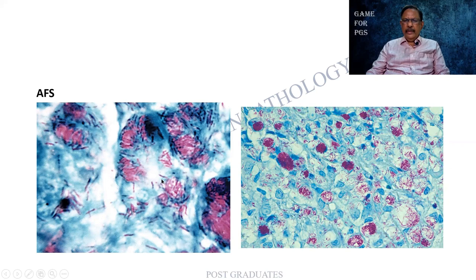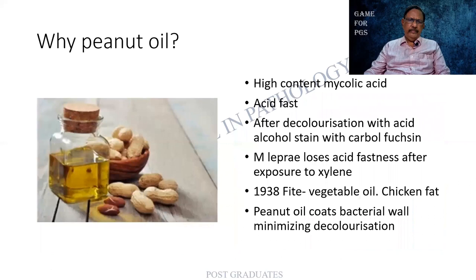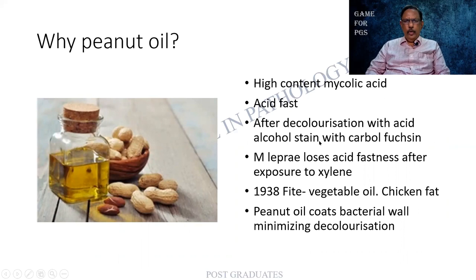If you are technically superb, you will see a fine difference between the two pictures. Observe that there are large vacuolated cells in the background harboring the bacilli in clusters — these may be called globi. The question is: why use peanut oil? Because of the high content of mycolic acid, the bacillus is supposed to be acid-fast, but after decolorization it can lose that. So this is prevented by means of peanut oil — it acts as a cushion to preserve the mycolic acid, preventing its disintegration. If xylene alone were used, Mycobacterium leprae would lose its acid-fastness after exposure.